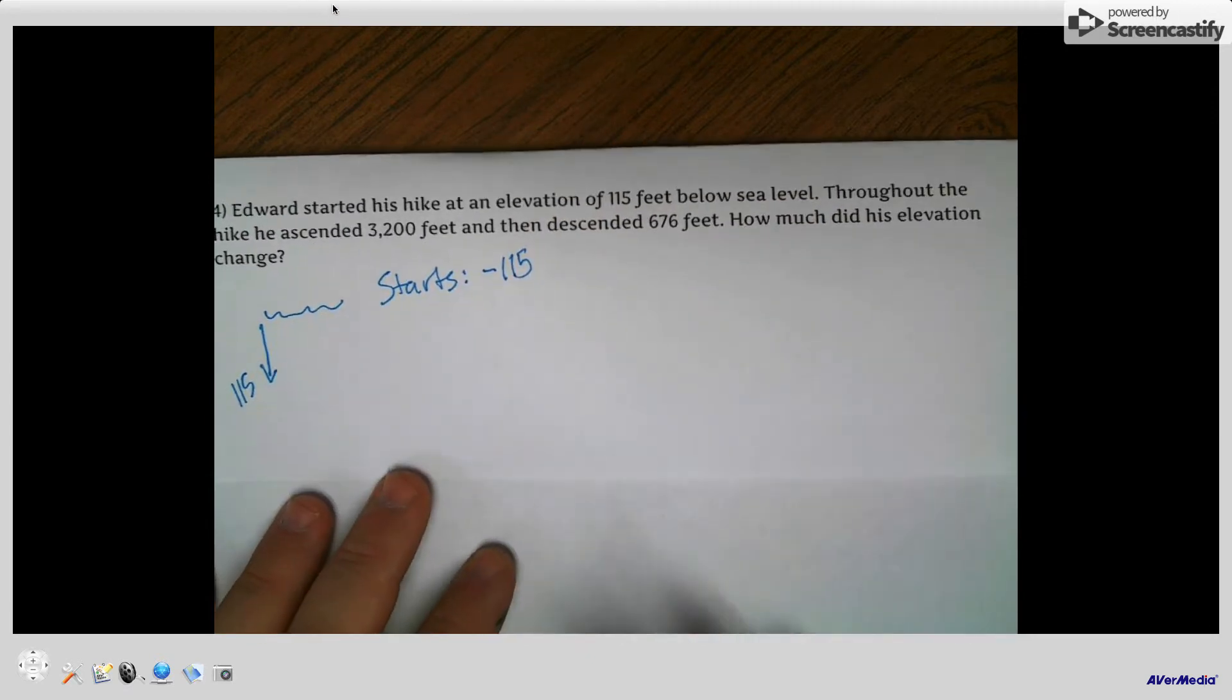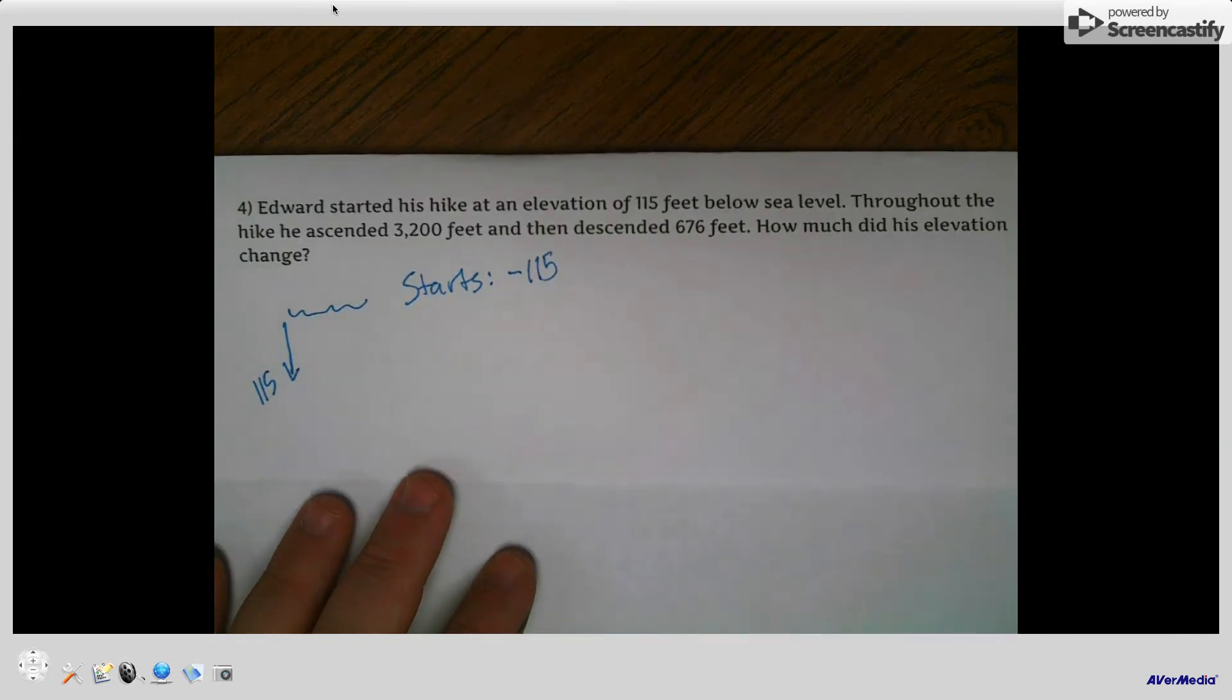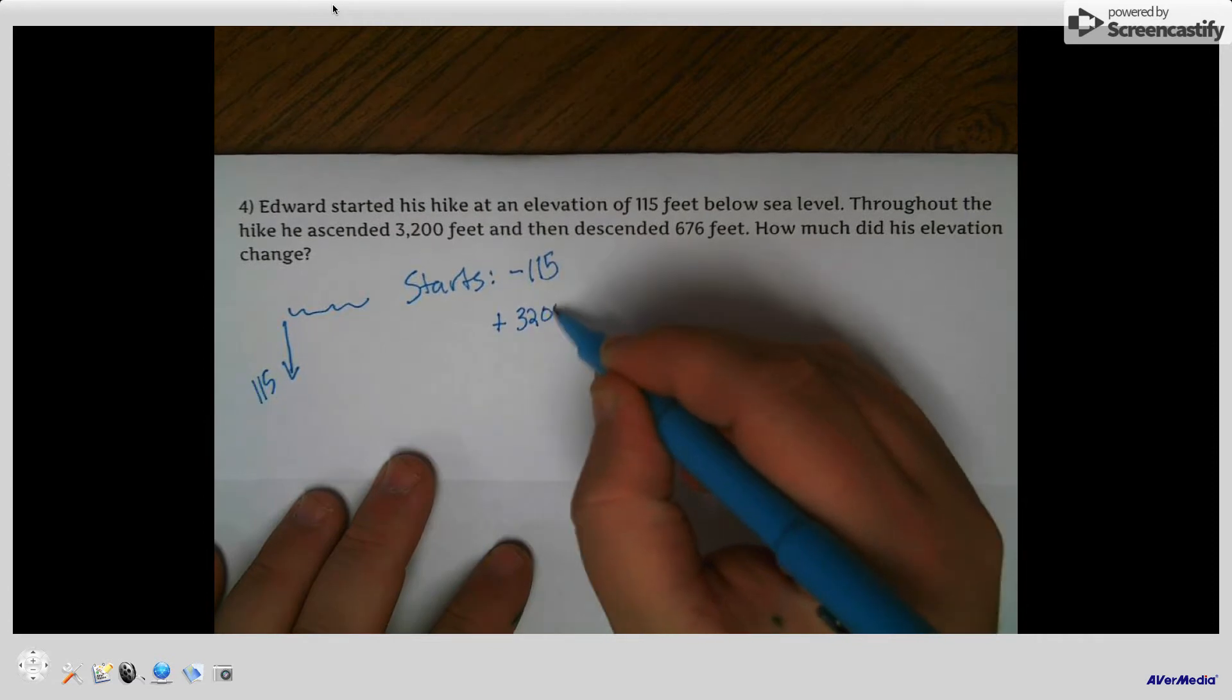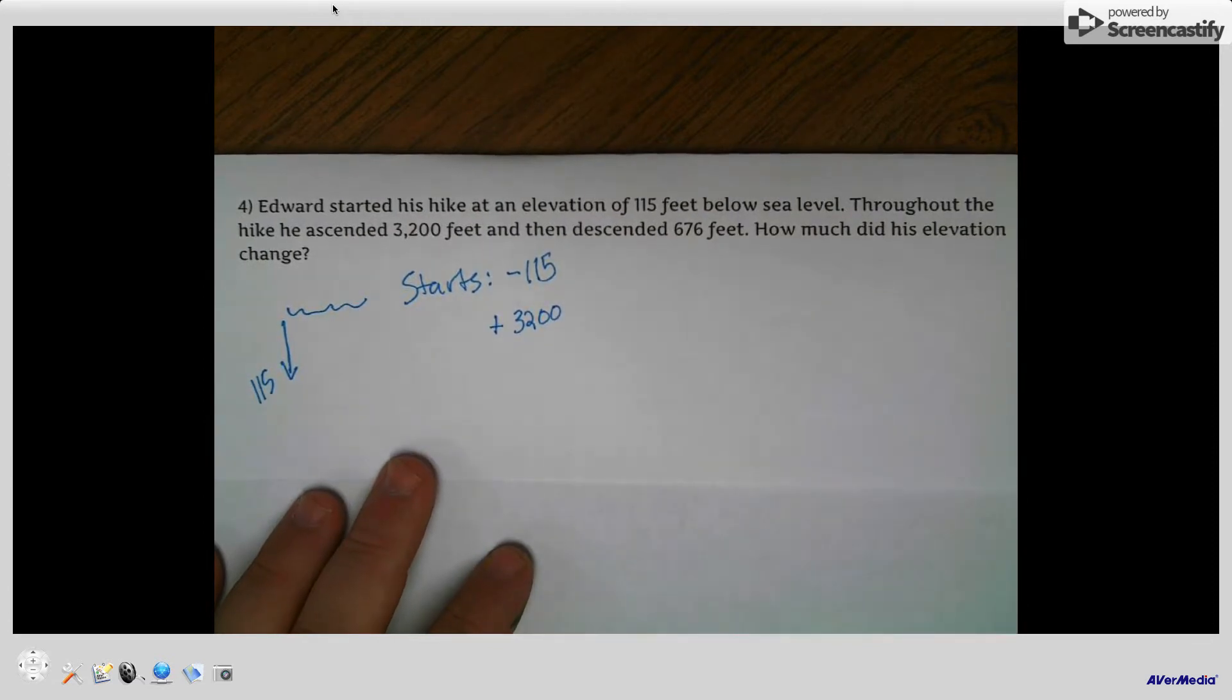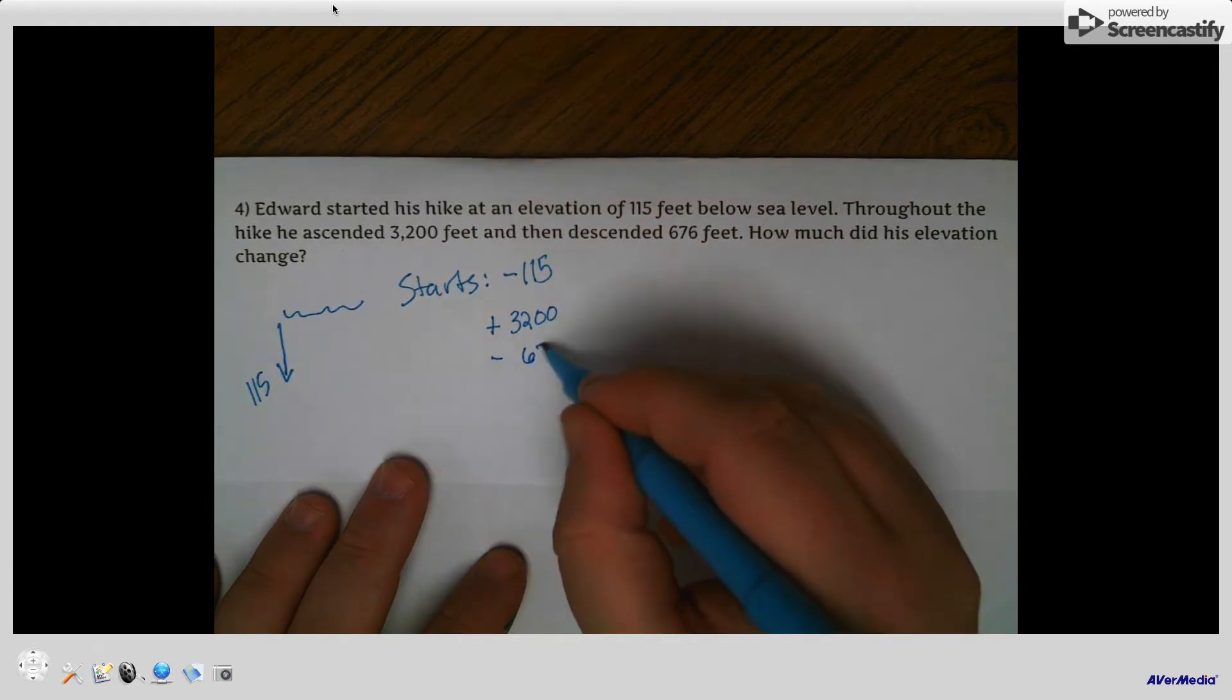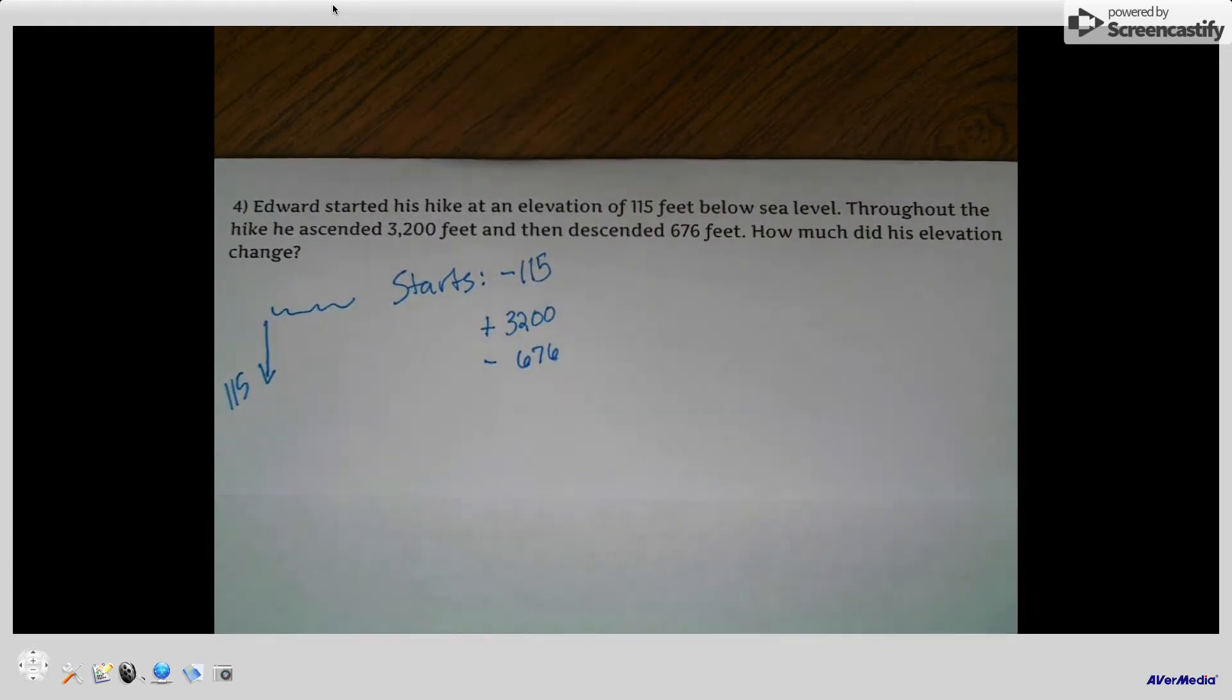So he starts at minus 115 because he's below. Throughout the hike, he ascends. So remember, ascending, you're going up, so we're adding 3,200 feet. And then he descends, so you're going down negative 676 feet. So how much did his elevation change?